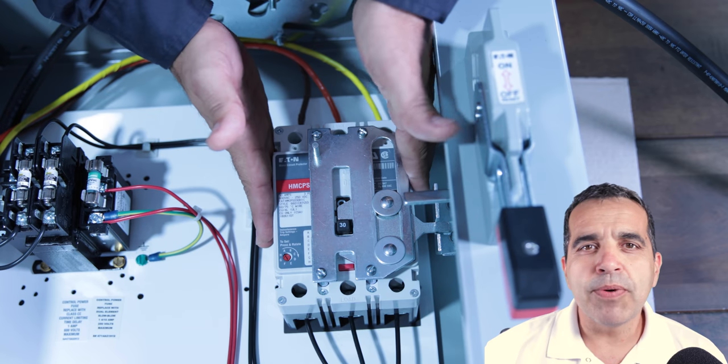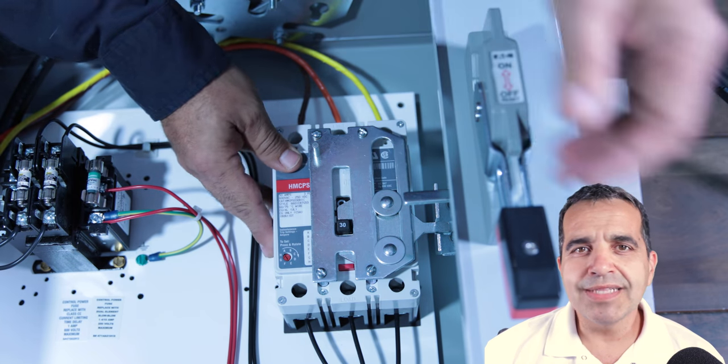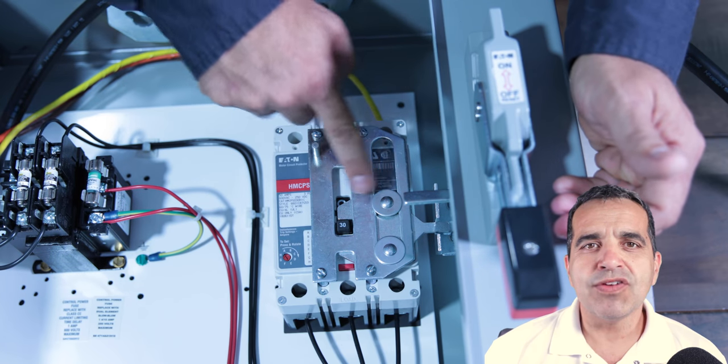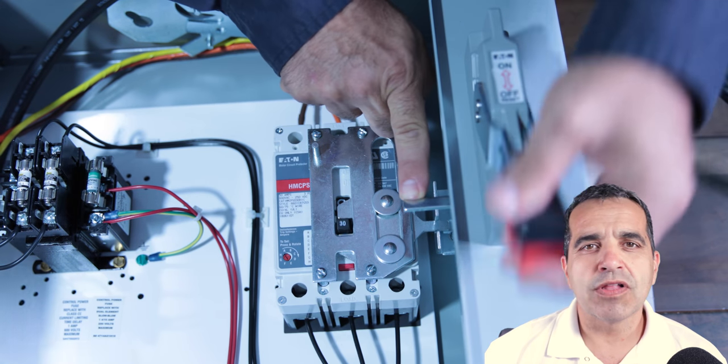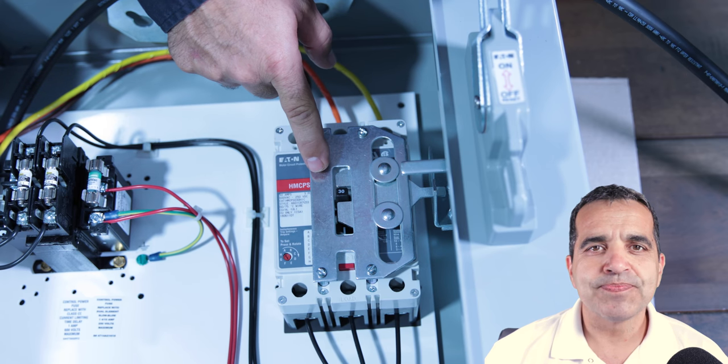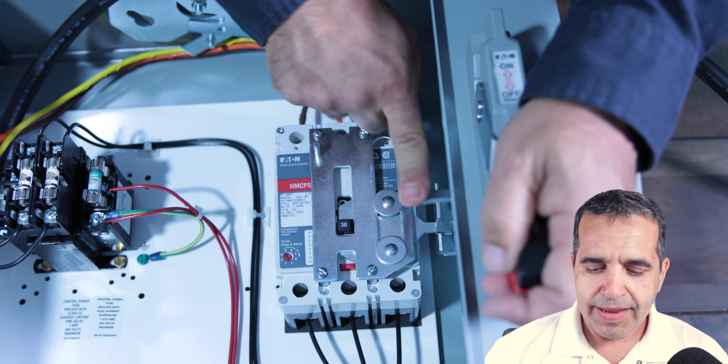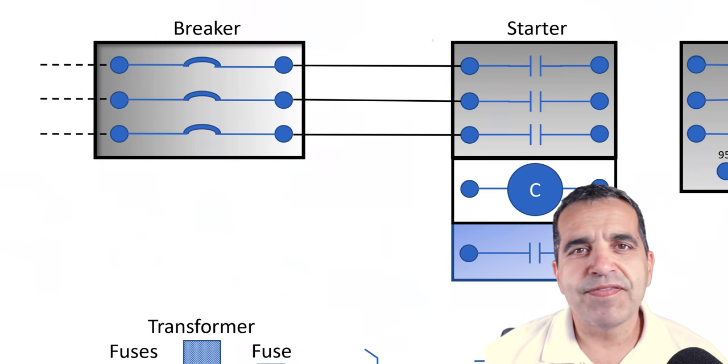The breaker has three contacts. This is a three-pole 480-volt breaker with three normally open contacts. When the breaker is closed, those contacts close. When the breaker is turned off, those contacts are open. Here we're showing our breaker closed, and then that closed breaker is feeding through three black wires.